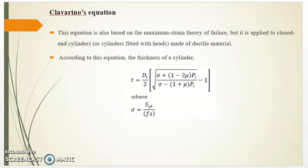Now we will see Clavarino's Equation. This equation is also based on the maximum shear stress theory of failure, but it is applied to closed-end cylinders fitted with heads, made of ductile metal. According to this equation, the thickness of the cylinder is given by: T = (dR / 2) × [√(sigma + 1 − 2mu × pi) / (sigma − (1 + mu) × pi) − 1]. Here, sigma is taken as yield strength divided by factor of safety.